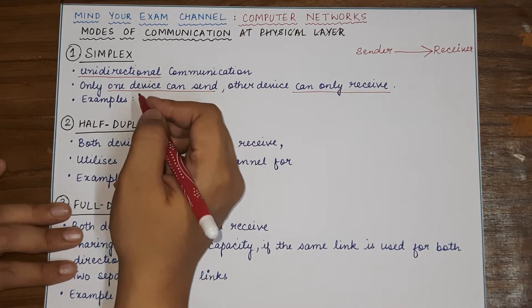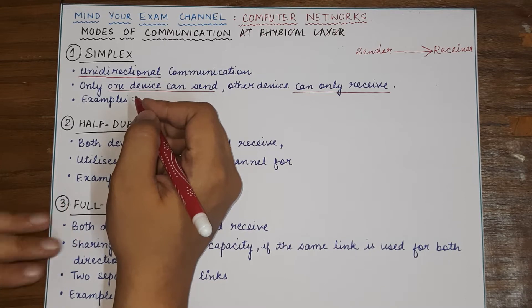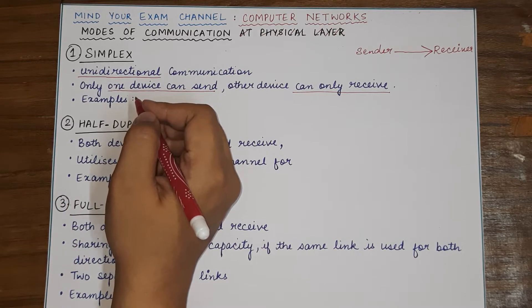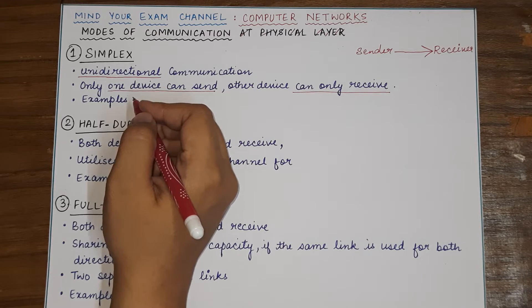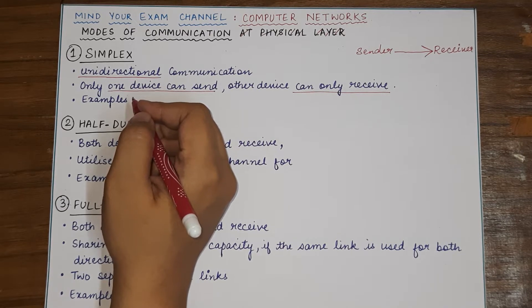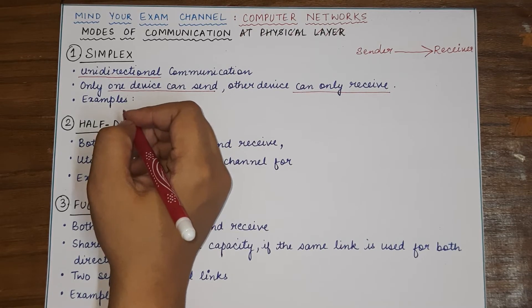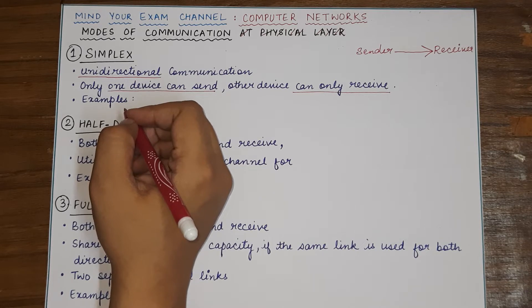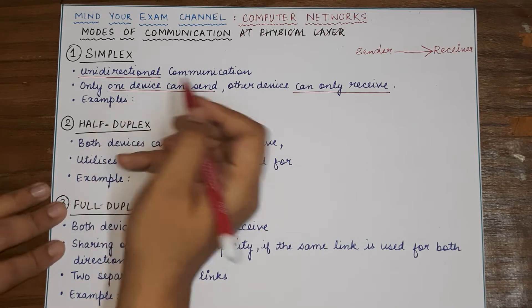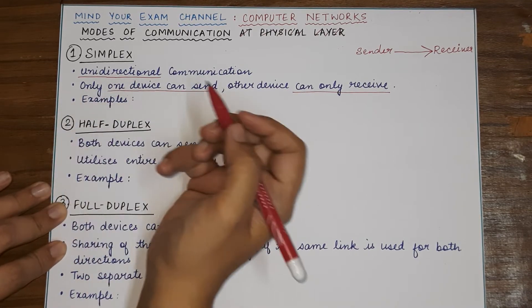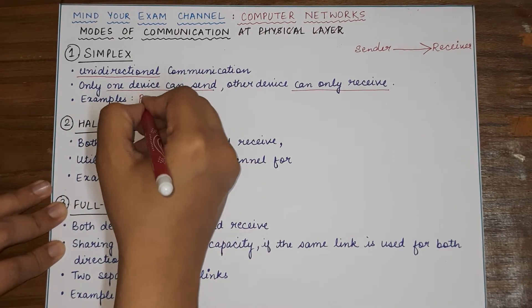And the example of simplex communication will be, you can imagine it like the one-way street where the traffic is going from one place to the other, or the direction of traffic is from the right to the left and no other car can come in the opposite direction. You can also put an example of say printing or keyboard.